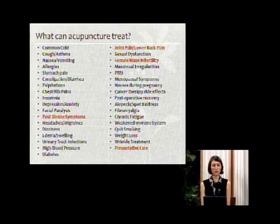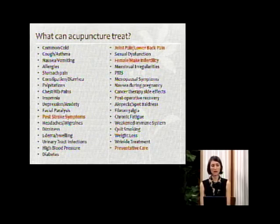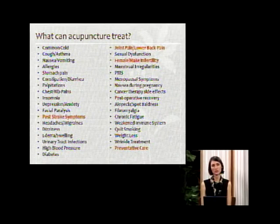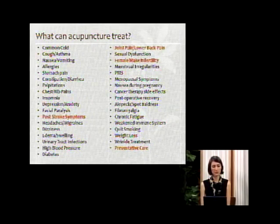I would like to talk a little about what acupuncture or herbal medicine can treat. Herbal medicine and acupuncture can help in any of your systems. Starting with the lungs: herbal medicine can help with the common cold, coughs, chronic coughing, or asthma. In the digestive system: nausea, vomiting, allergies — most allergies are rooted in digestive system imbalances — stomach pain, constipation, or diarrhea. For the heart: palpitations, chest or rib pain, and insomnia, depression, or anxiety are also treatable with Chinese medicine.